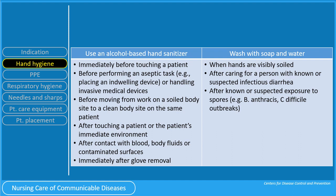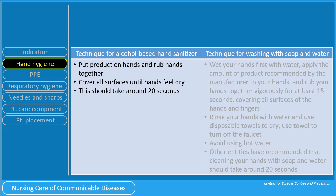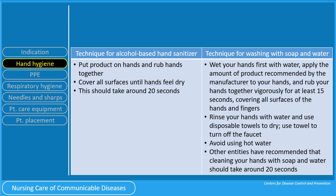Examples include Bacillus anthracis and Clostridium difficile outbreaks. When using alcohol-based hand sanitizer, put product on hands and rub hands together to cover all surfaces until hands feel dry. This should take around 20 seconds. For hand washing with soap and water, wet your hands first with water, apply the amount of product recommended by the manufacturer to your hands, and rub your hands together vigorously for at least 15 seconds to cover all surfaces of the hands and fingers. Other entities have recommended that cleaning your hands with soap and water should take around 20 seconds. Rinse your hands with water and use a disposable towel to dry.